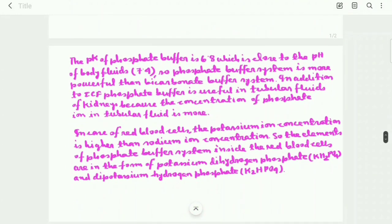The pK of phosphate buffer is 6.8, which is close to the pH of body fluids that is 7.4. So phosphate buffer system is more powerful than the bicarbonate buffer system. In addition to intracellular fluid, phosphate buffer is useful in tubular fluids of kidneys.